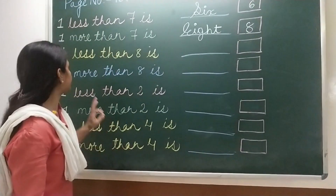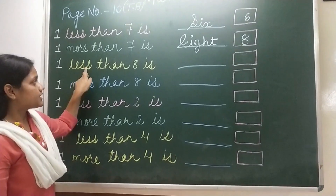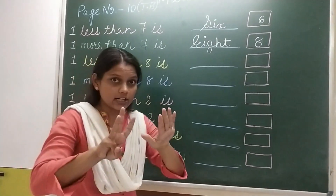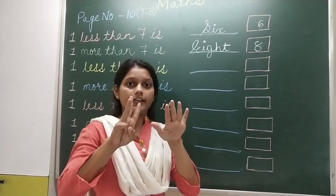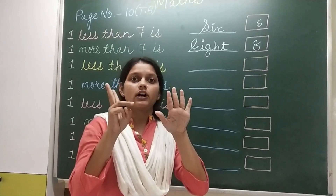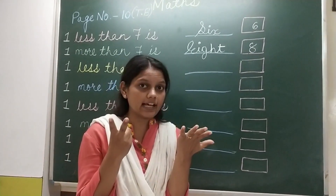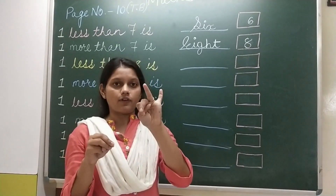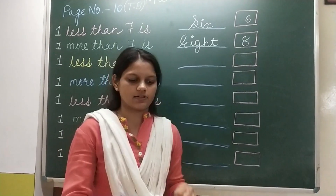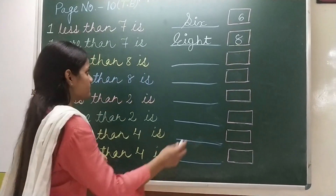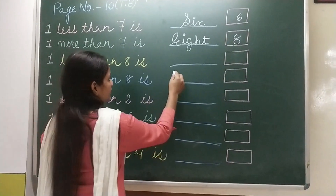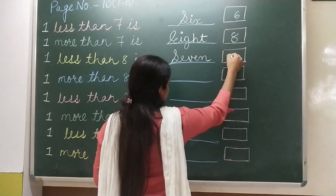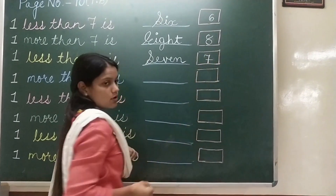Next: 1 less than 8. So 8 fingers and 1 less — less means 1 cut. So how many left? 1, 2, 3, 4, 5, 6, 7. So we will write 7 here — SEVEN — 7. Number 7 in the box.